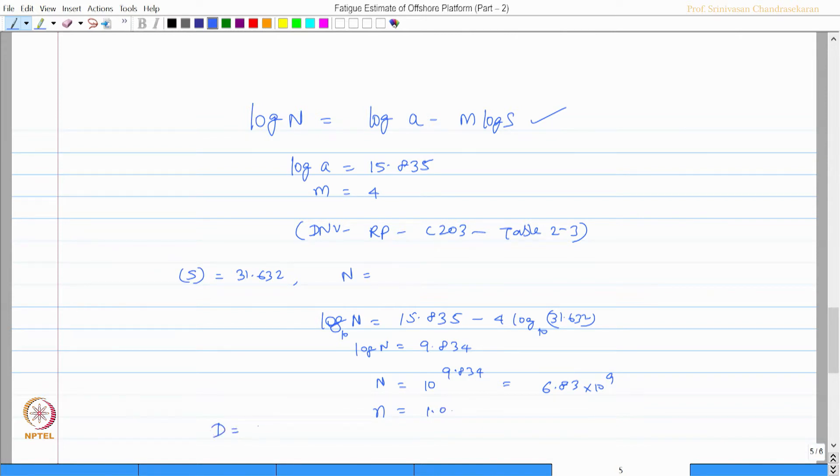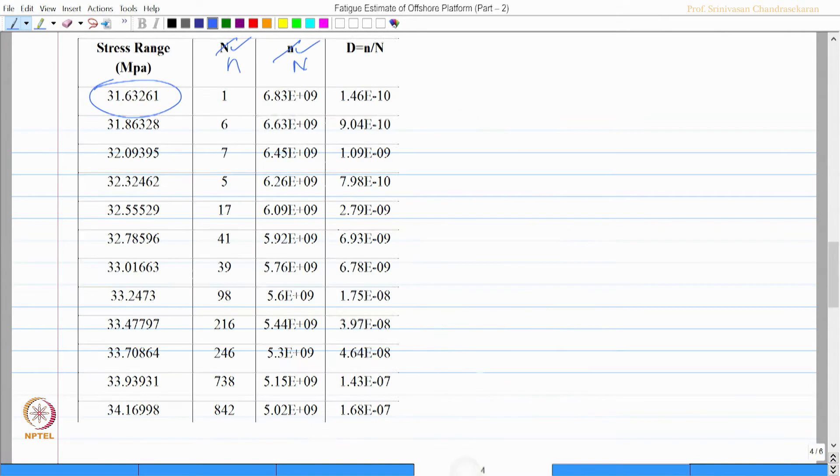Now d is estimated as small n by capital N which becomes 1.46 times 10 power minus 10 which is seen here.